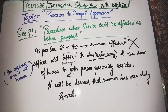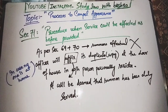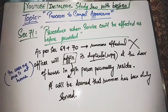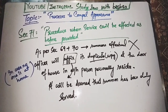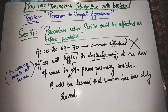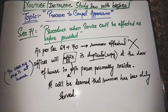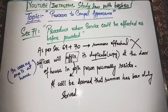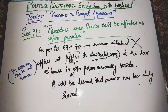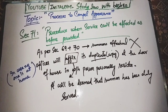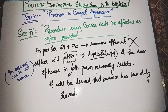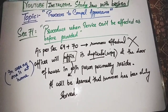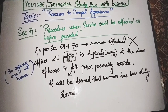Section 71 deals with the procedure when service cannot be effected as provided before — meaning if the summon cannot be served under Sections 69 or 70. If it cannot be personally served and no family member is available, meaning no one is at home, the officer will affix a copy of the summon on the outer door of the house where that person resides. Once the copy is affixed, it is deemed that the summon has been personally delivered to that person.